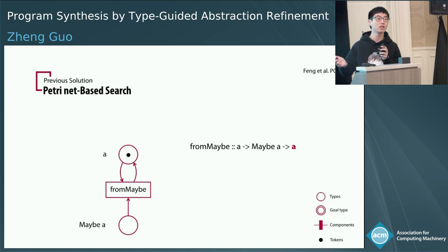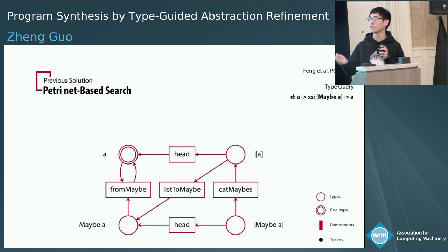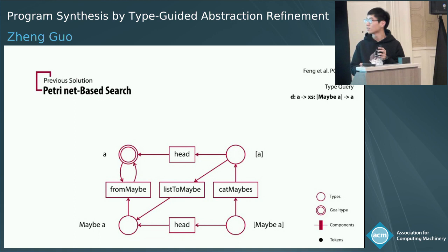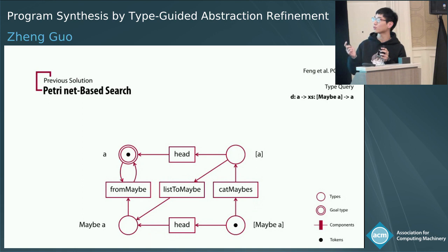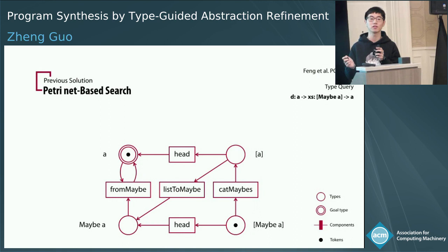Suppose we have one token in each of the two places — types A and maybe A. We say the transition fromMaybe is fired if it consumes both tokens from its incoming places and produces a new token into its outgoing place. After firing, there is no token left in maybe A, so if we want to fire this transition again, it cannot be fired because one of its incoming places does not have a token to be consumed. Following the same style, we can add many components into the Petri Net. Our task is to find a path in this graph, which corresponds to some program we want. We first assign tokens to the argument types of our type query — in our example, A and list maybe A — and our goal is to move these tokens so that we only have one token left in the return type of our query, which is A, with no tokens in the other places.